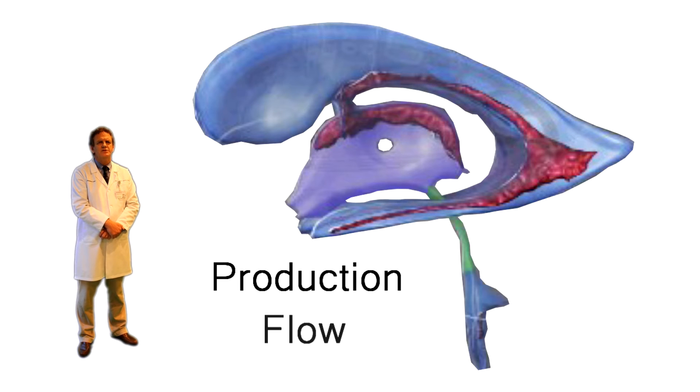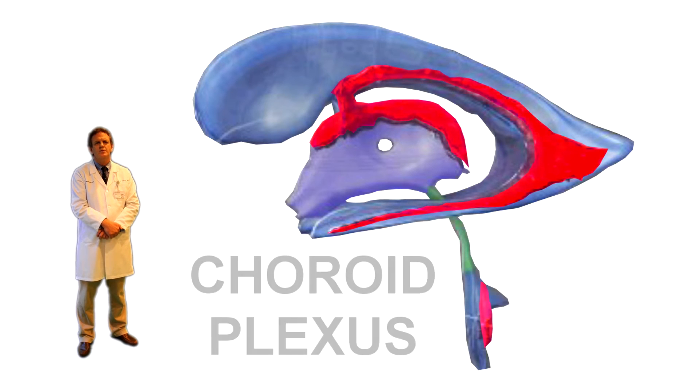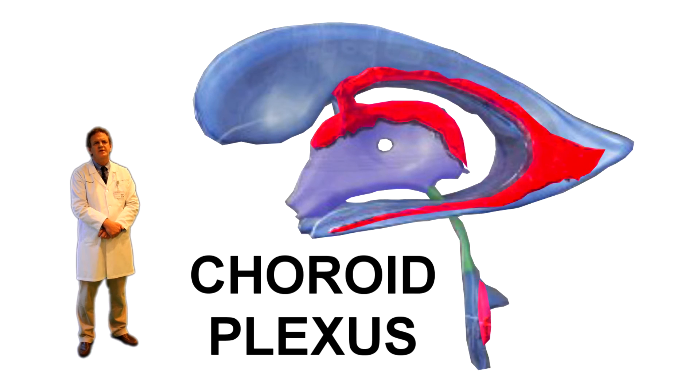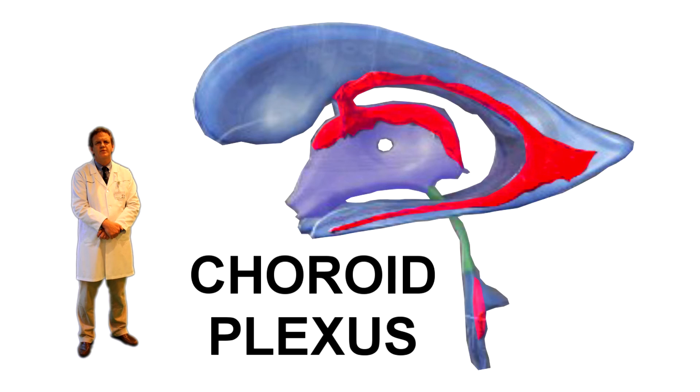CSF is produced by a rippled structure called the choroid plexus, of which there are many. They are located on the bottom of both lateral ventricles and the top of the third and fourth ventricles. After it is produced in these structures, the cerebrospinal fluid moves down the cascade of ventricles until it reaches the fourth.